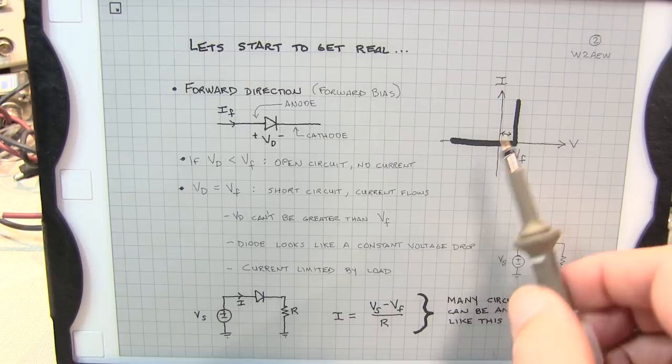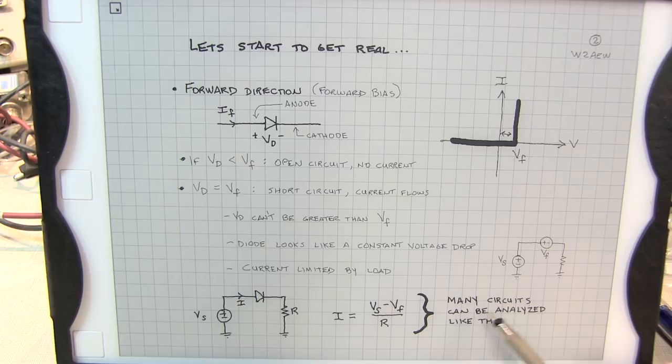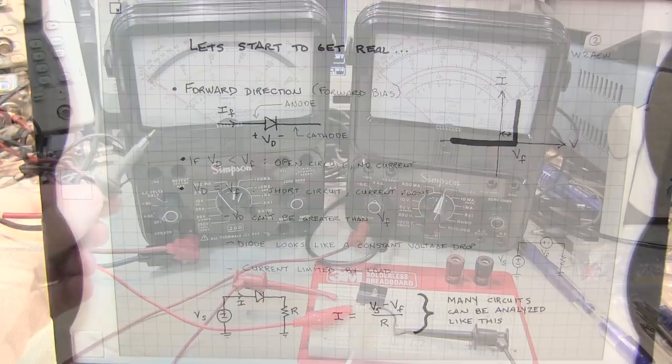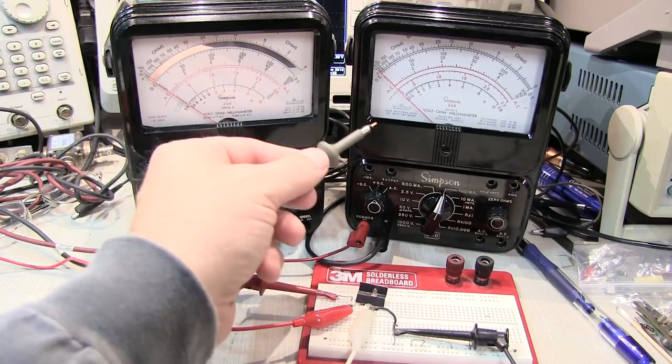Now this very simple approximation to a real diode behavior is really very handy and many circuits can be analyzed by simply using this very simple model of the diode. I've now added a voltmeter to measure the voltage across the diode as well as the ammeter to measure the current through it.